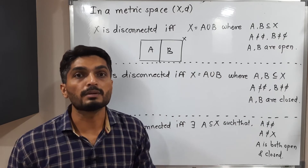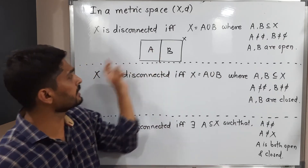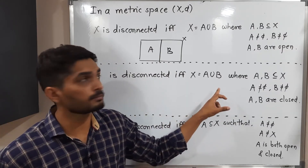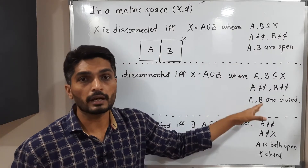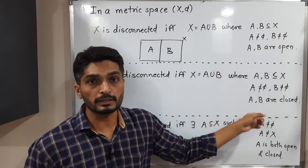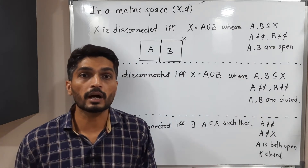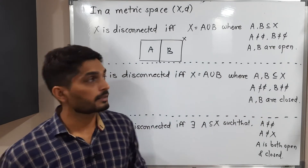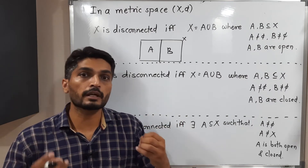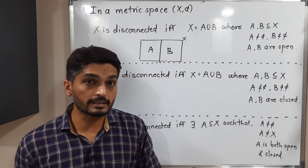The next definition is similar. X is disconnected if and only if X equals A union B, where A and B are subsets of X, A is not equal to phi, B is not equal to phi, and the difference here is that both A and B should be closed sets. So if A and B are closed, non-empty, and their union is X, we can declare that X is disconnected.